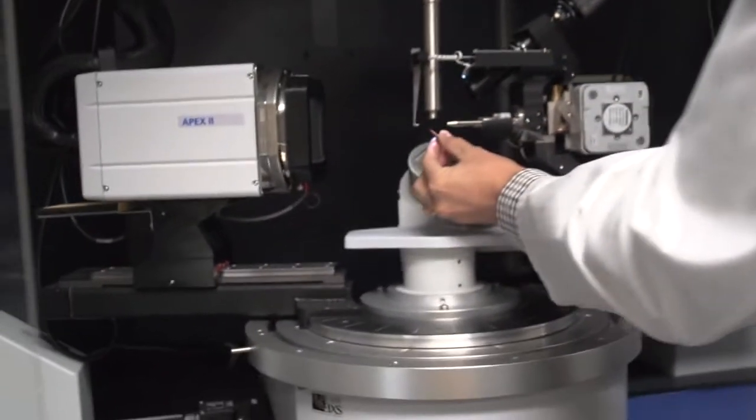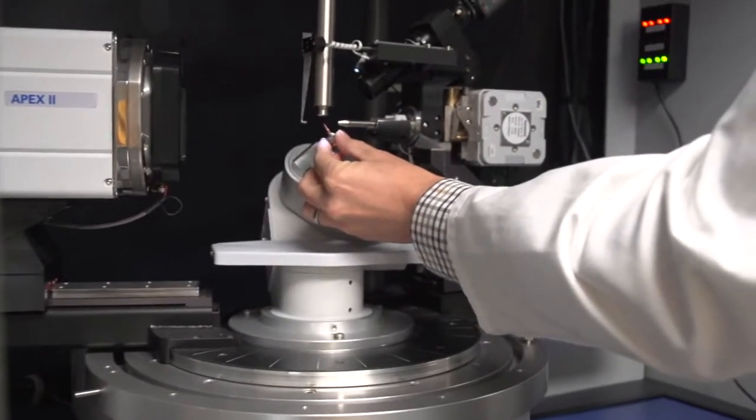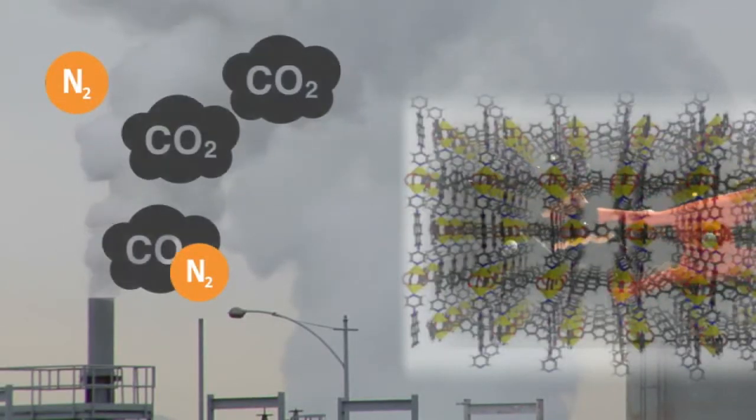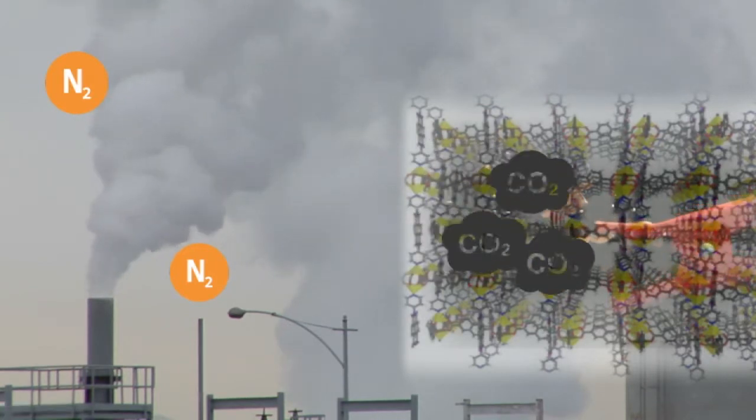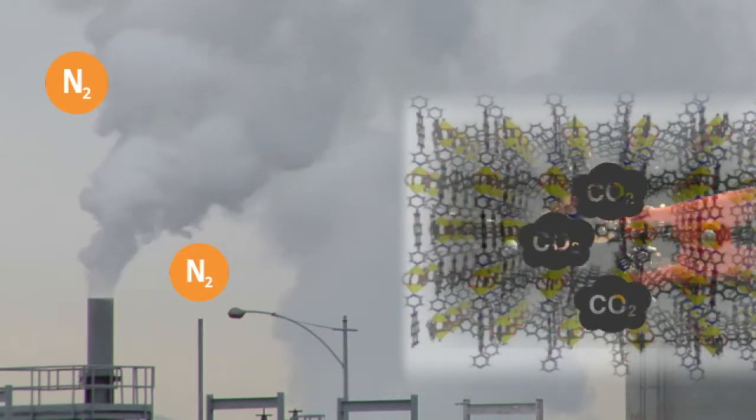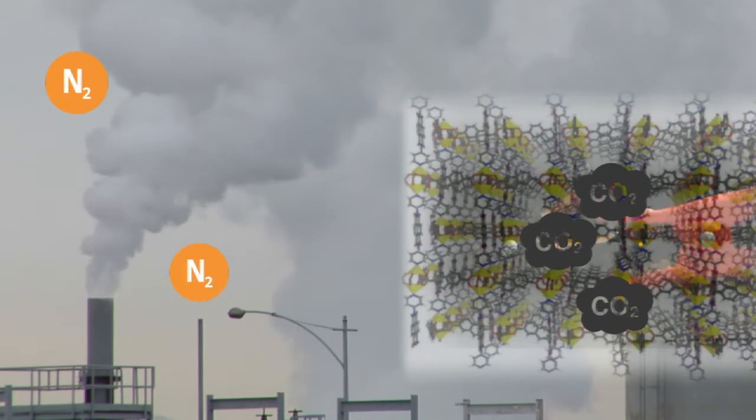So we need to address this challenge differently. So what we do, we induce or we incorporate charges in our framework which can selectively attract only CO2 molecules because CO2 and nitrogen, they differ completely in their electronic properties. So this is how we selectively can attract CO2 molecules.